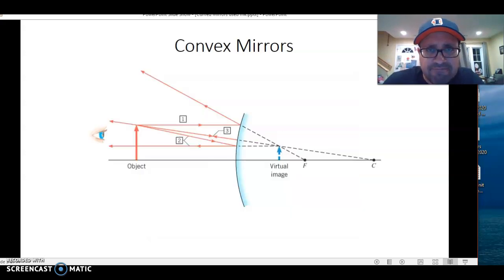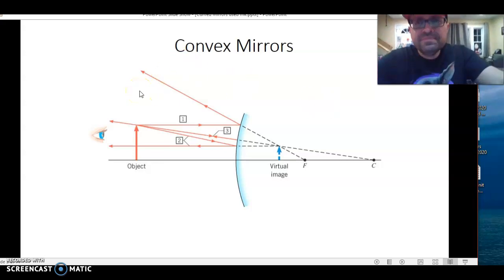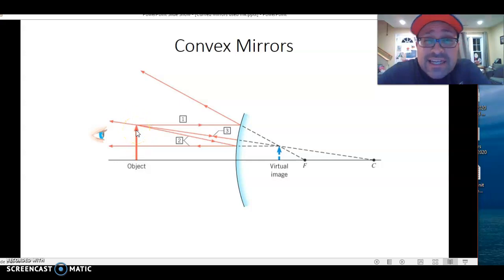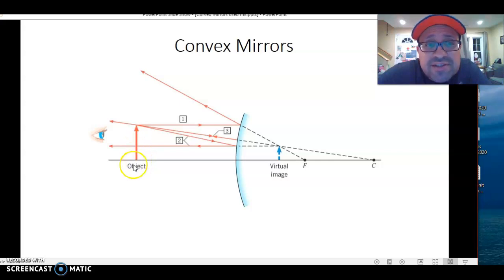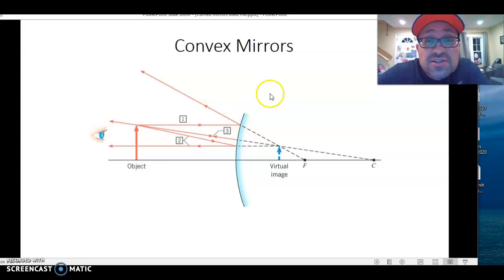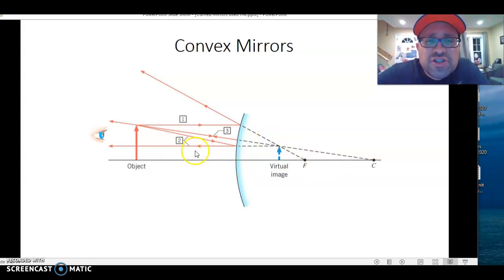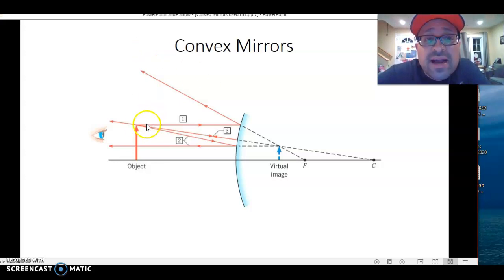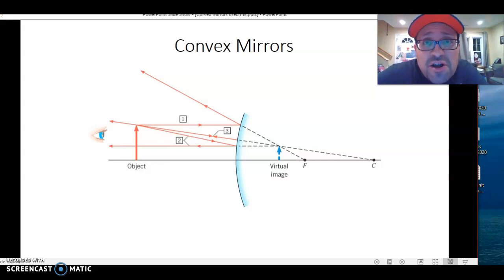Let's start with our first ray diagram — convex mirrors. We have an object; in physics, arrows are used because they're easy to draw. This is the top of the object, this is the bottom. Here we have the principal axis, the focal point, and the center of curvature. For convenience, let's say the focal length is 10 centimeters, which means the center of curvature would be 20 centimeters away from the mirror. The center of curvature can be thought of as the center of a sphere — this mirror is a segment of that sphere. We're only going to draw three of the many millions of light rays emanating from the object, using the top of the object as a reference position — to simplify things so we don't have to draw a million light rays.